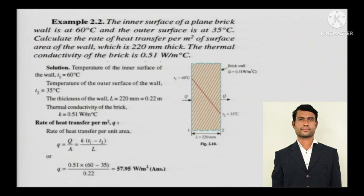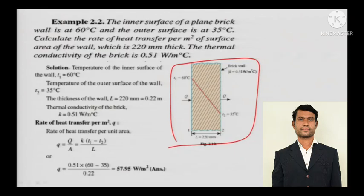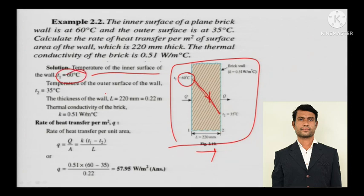This is the diagram, very beautifully described. The temperature is actually reducing, that is why we get a minus sign in Fourier's law when we are increasing towards the thickness. The temperature of the inner surface T1 is equal to 60 degree Celsius. The temperature of the outer surface of the wall is 35 degree Celsius. You have to chart out what is given and what is not and what you need to attack on first.